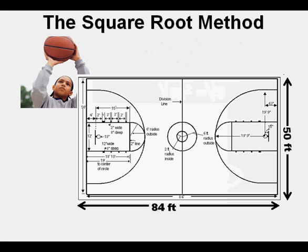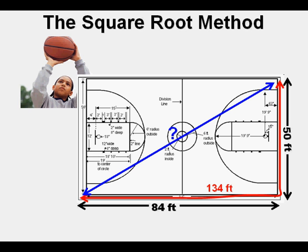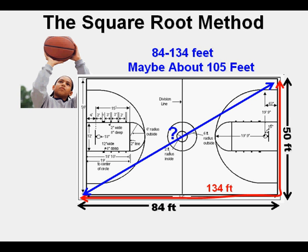Joe's basketball coach sometimes has the team run laps around the gym floor for conditioning. The court is standard size — 84 feet long and 50 feet wide — making 134 feet along the sideline from one corner to the other, shown here in red. Joe's teammates ask how far it would be to take a shortcut directly from corner to corner, shown in blue. Joe estimates it must be between 84 and 134 feet — probably about 100 feet.